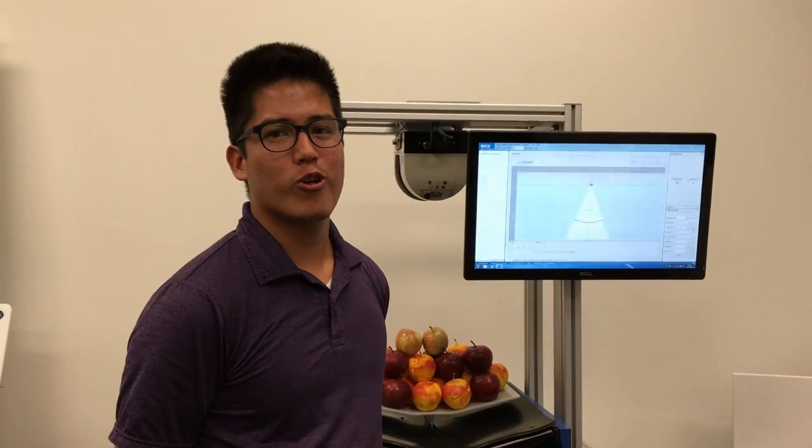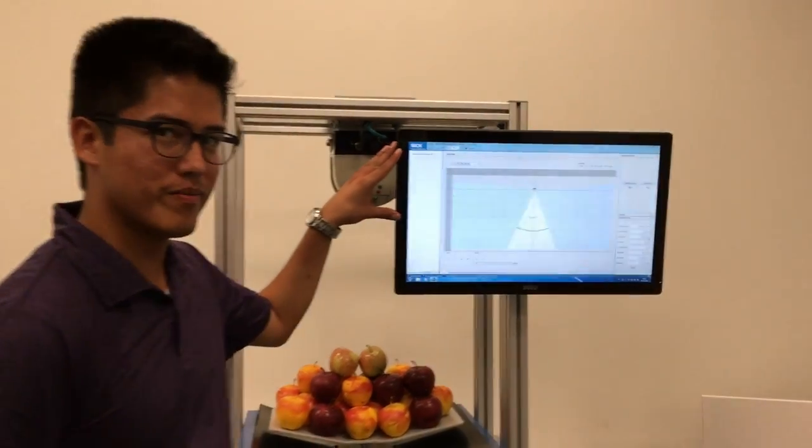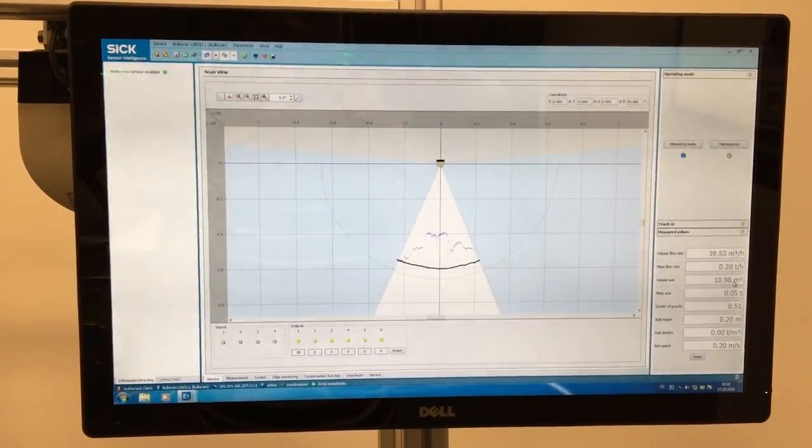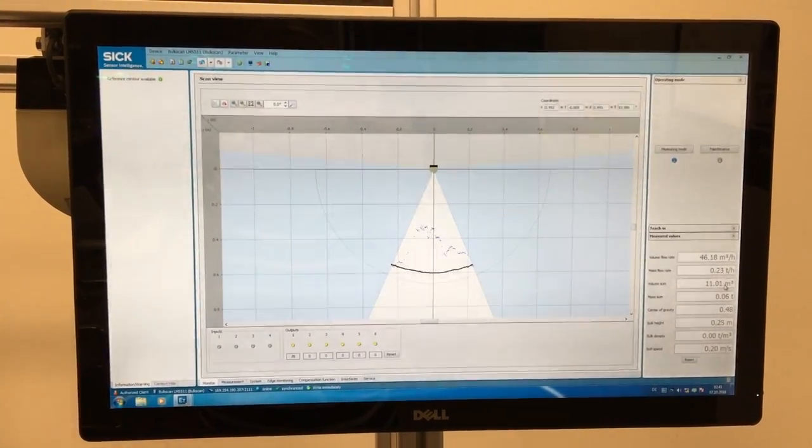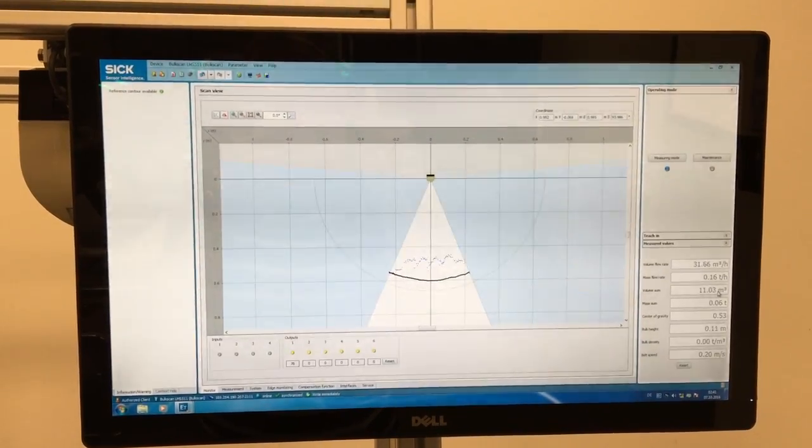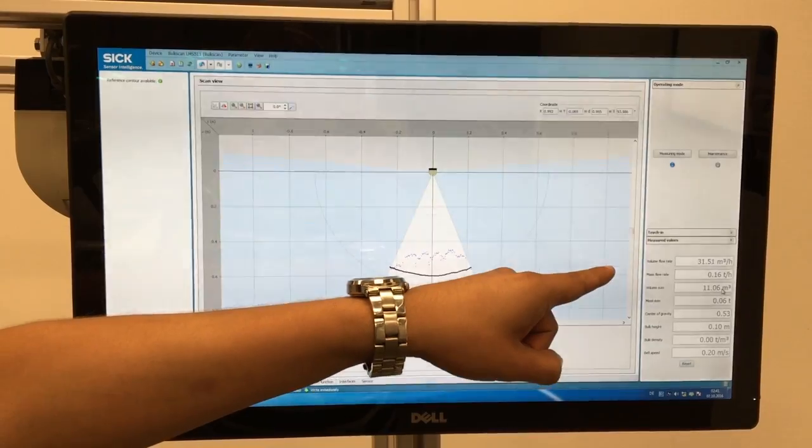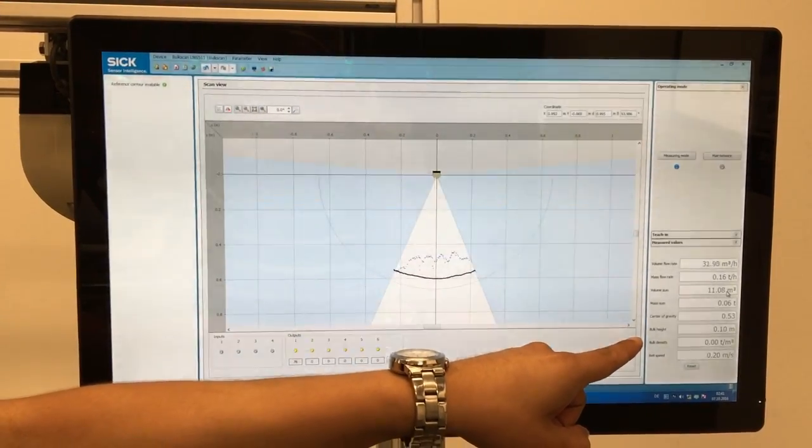Now we're going to take a closer look into the sensor software. Here I have the apples stationary directly under the laser scanner. I'm going to remove two of the apples and now you can clearly see that the volume and mass flow rate readings have decreased as well as the bulk height measurement.